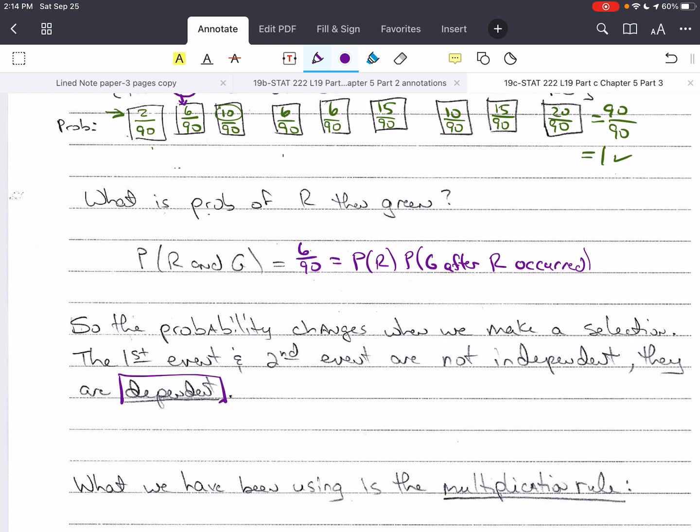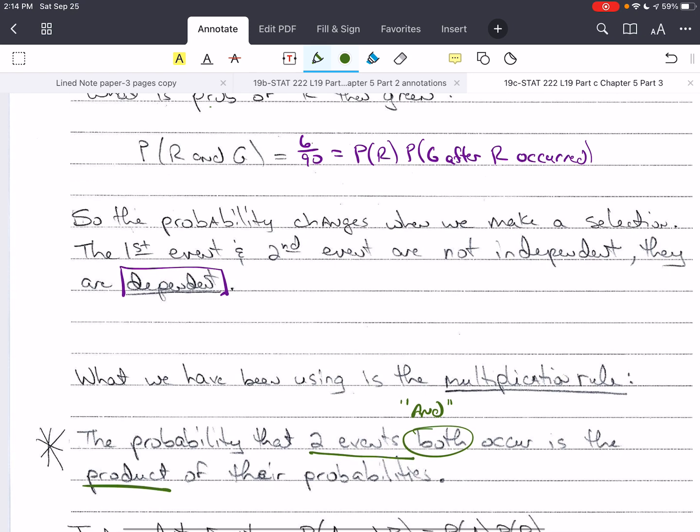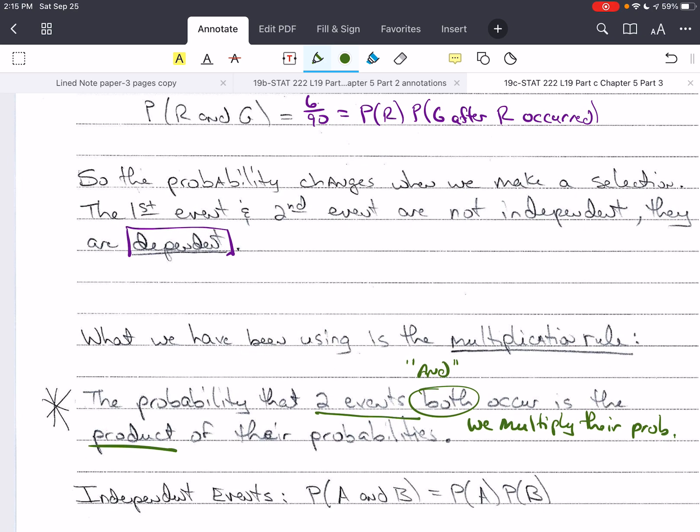What we have been using here is called the multiplication rule. For all the probabilities for compound events here, we've used the multiplication rule. It says that the probability of two events, that two events both occur, this means an and, is the product of their probabilities. In other words, we multiply their probabilities. When we had independent events, this is a special case of the multiplication rule. It says that the probability of A and B is simply equal to the probability of A times the probability of B.